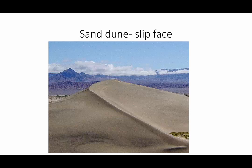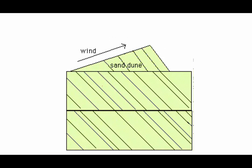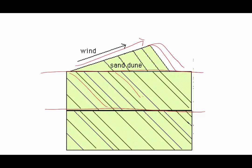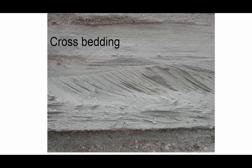Wind blows sand up the back of the sand dune, and the sand slips down the steep side, known as the slip face. The wind continuously blows up one side and creates more beds falling down the other side. Here you can see the normal horizontal beds and the crossbeds. Crossbedding can also form as sand falls down the edge of a river delta. How can you tell that this crossbedding is from a delta and not a sand dune?